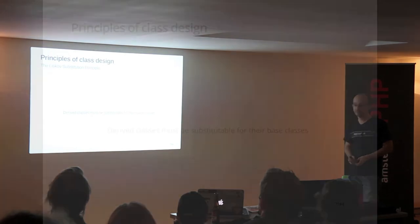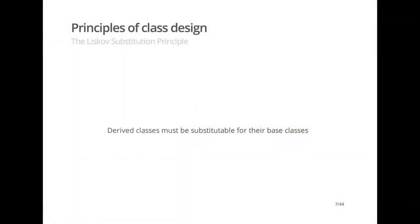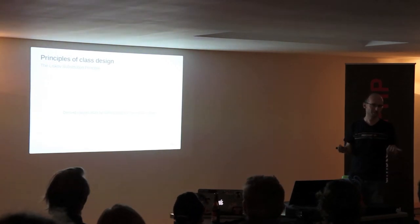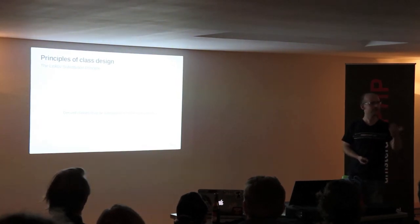The third principle is called the Liskov Substitution Principle — derived classes must be substitutable for the base classes. In a hierarchy of classes you should be able to trust the interface, and whenever two classes implement the same interface, you should be able to exchange them without any problems. They should have the same contracts — they should return the same things and take the same things.